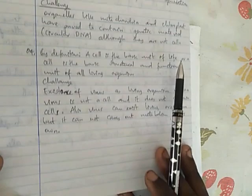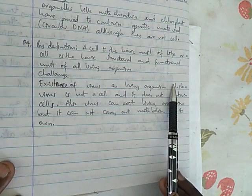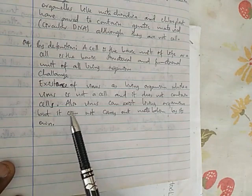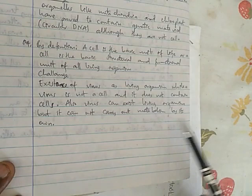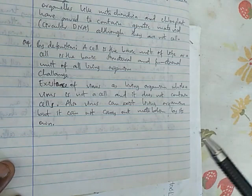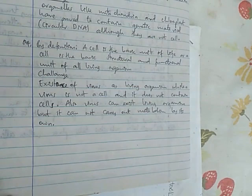About the fourth idea, by definition, a cell is the basic unit of life, or cell is the basic structure and the functional unit of living organism. But the challenge here is that existence of virus as a living organism, while a virus is not a cell and it does not contain cells. Also, virus can exist as a living organism, but it cannot carry out metabolism by its own. According to cell theory, the cell is the thing where all of the metabolic activities they are carried out within it. But a virus cannot carry metabolic activities by itself. However, it is a living organism and it's not made of cells or cellular material. So these are challenges of the theory.